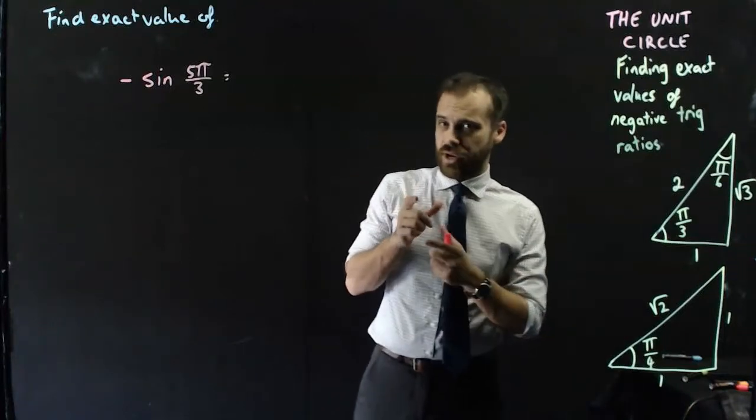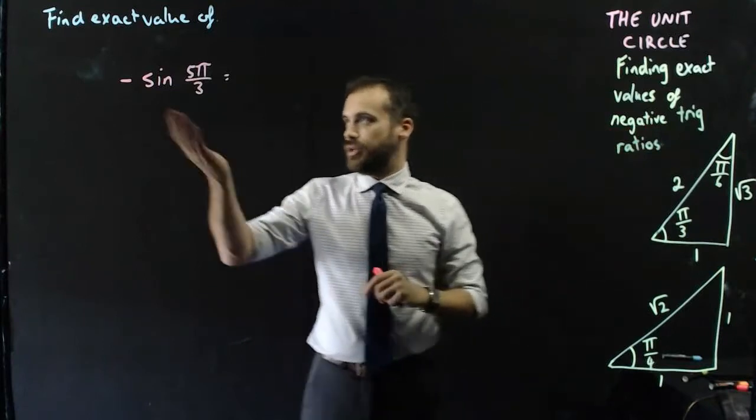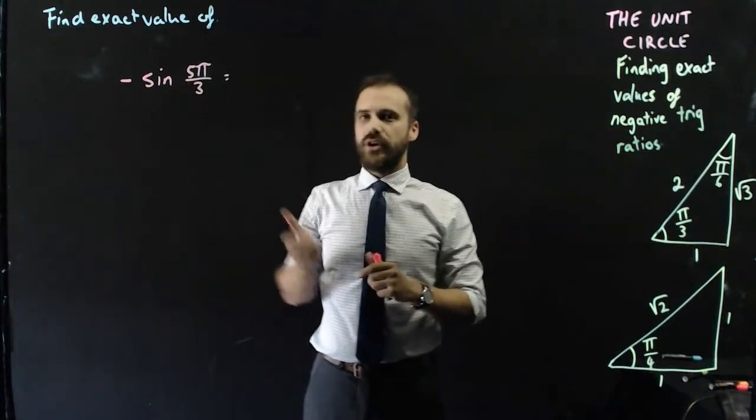We're still finding exact values around the unit circle. This time though, we're going to have a negative trig ratio, like negative sine 5π/3.